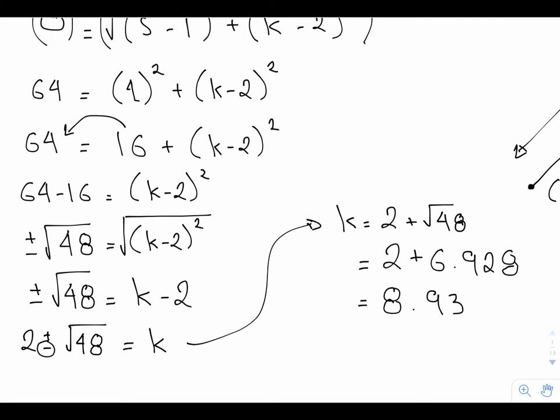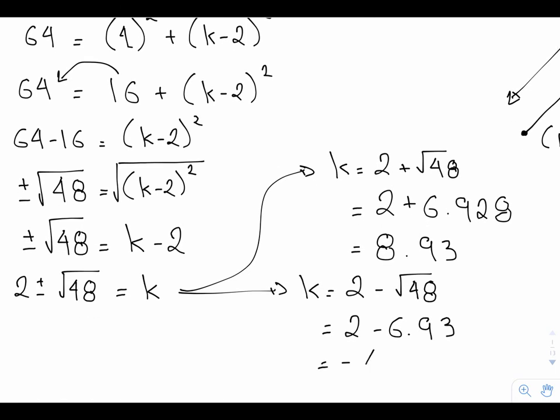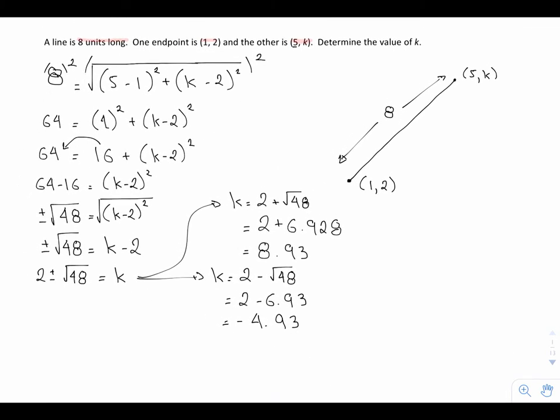Similarly, if I take the negative value and identify what k is, I have k equals 2 minus root 48, which is the same as 2 minus 6.93, which is the same as negative 4.93. So there, we've done all the work to identify what k is, and we ended up getting two values. So how does this figure into our question here?